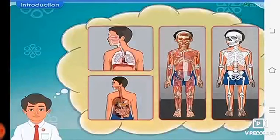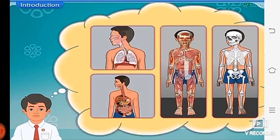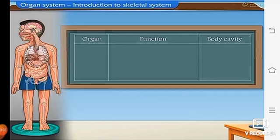But before studying about it, let us recall what we have studied in the previous classes. We have learned about some organ systems — their functions and their locations in our body. So with the help of that, we are going to complete the table which is given in our textbook. Let us recall functions of the important organs of various organ systems and also their locations in our body.